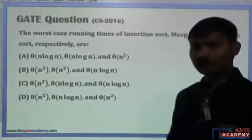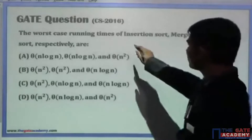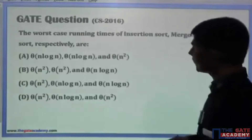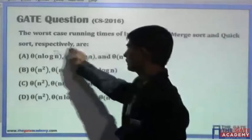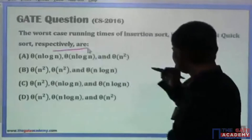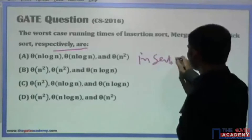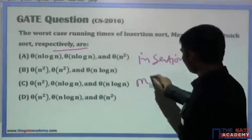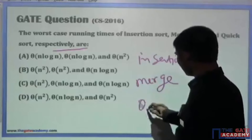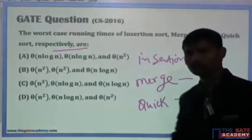This question is from the algorithm chapter. The question asks about the worst-case running time of insertion sort, merge sort, and quick sort algorithms. Let me write these down: first insertion, second merge sort, and third quick sort.